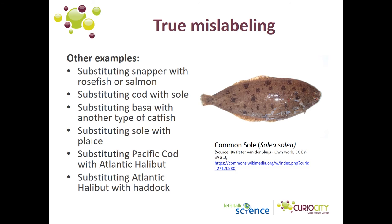Other mislabeling occurred with fish that have white flesh, which can be difficult to tell apart once their skins have been removed. In these cases, the mislabeling may have been accidental. However, cheaper species such as haddock may have been labeled as more expensive species such as halibut. It is interesting to note that several types of white fish, including sole, were substituted for cod.